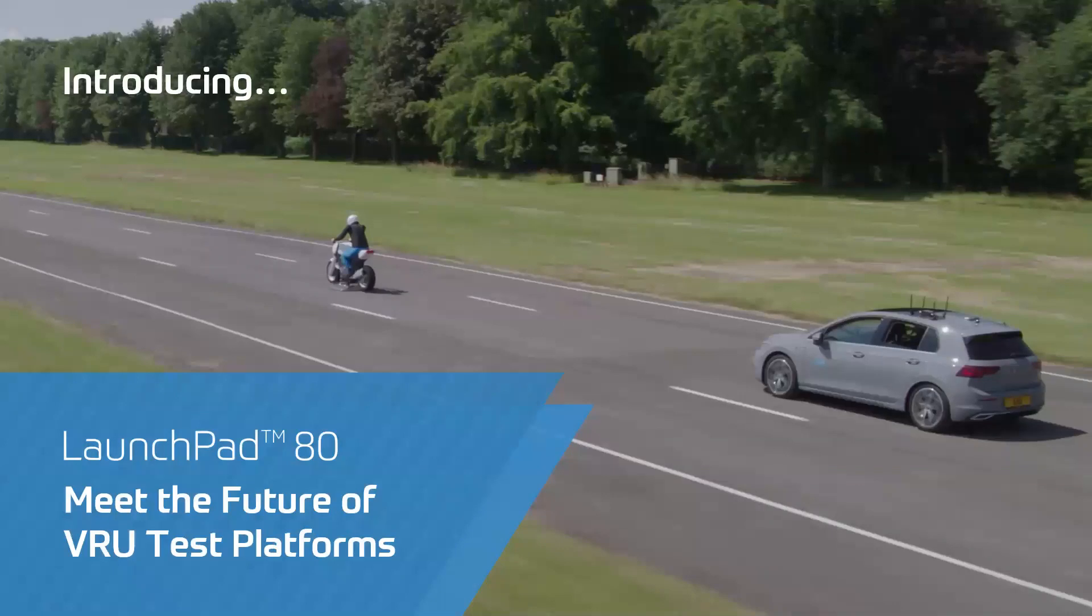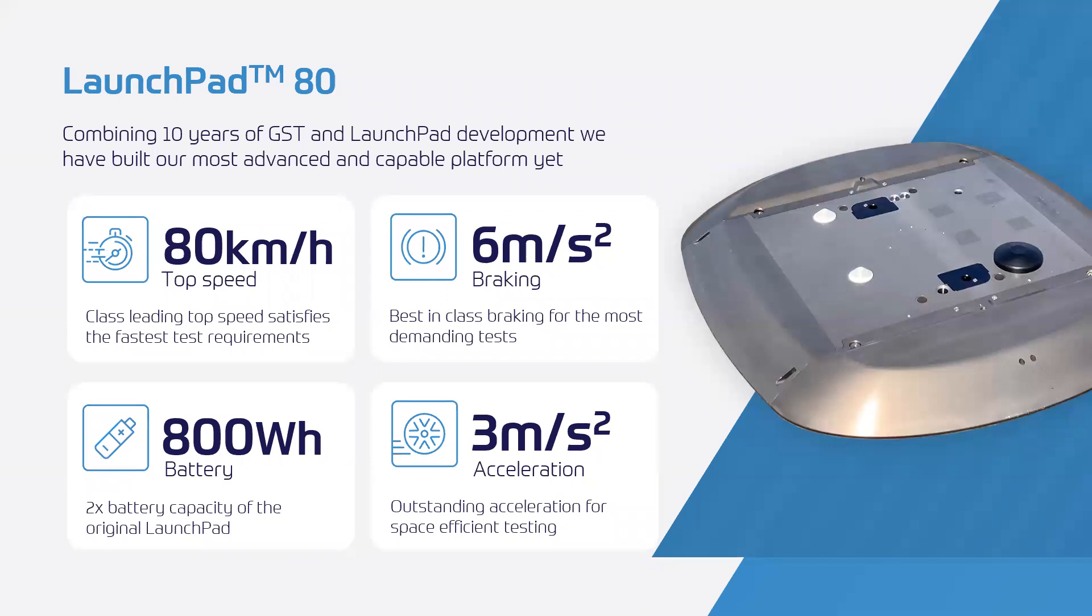So to meet this need for increased testing I'm proud to introduce our newest test tool, the launch pad 80, the future of VRU test platforms. For the first time making the possibility of testing at higher speeds and decelerations a reality. Let's take a closer look at the platform. So of course launch pad 80 stands for 80 kilometers per hour. That is the headline.